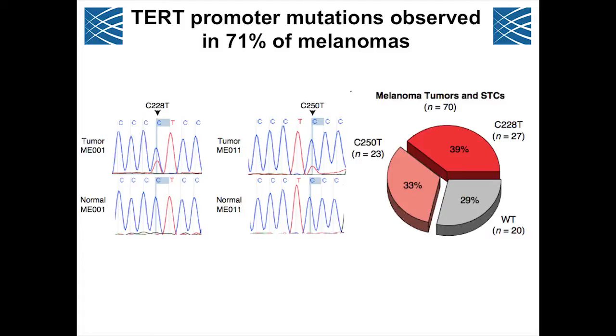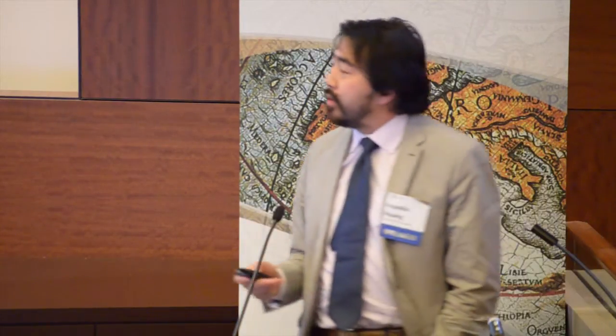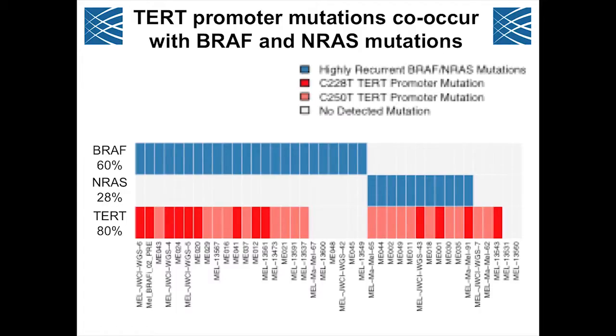In an extension cohort, we found that 71 percent of the melanomas had either one of these two mutations. This was an incredibly surprising result — more common than BRAF V600E — making these two mutations the most common mutations seen to date in melanoma. When we looked across our collection for BRAF and NRAS mutation data, we found these did co-occur with NRAS and BRAF mutations in the samples.